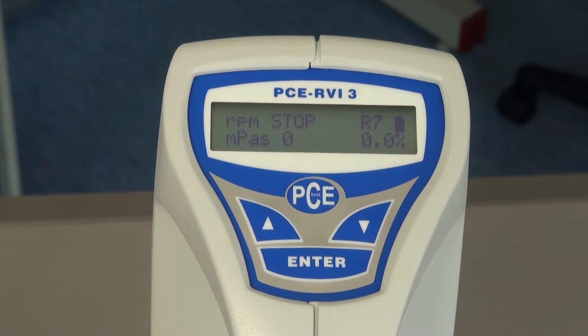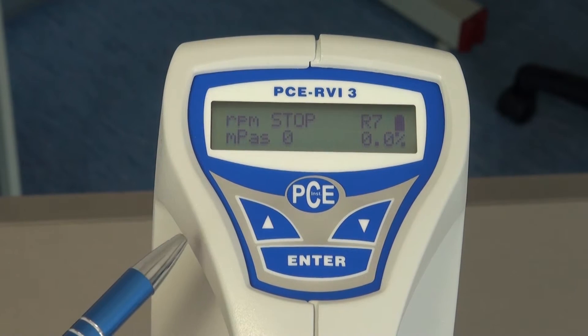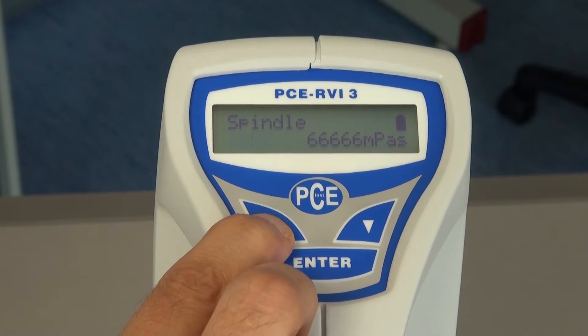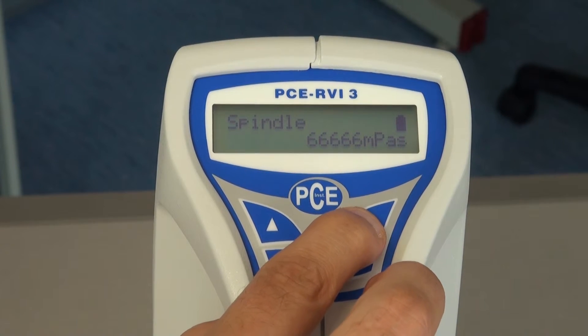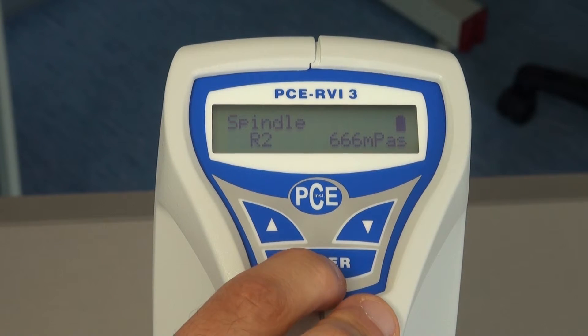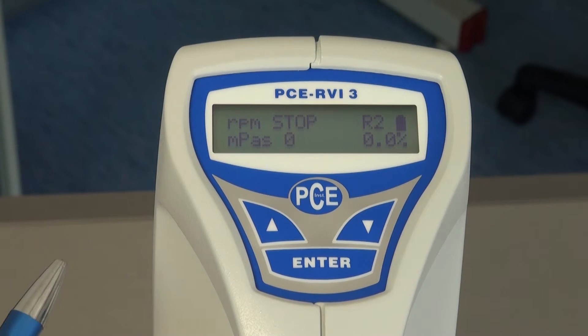Here at the top the number of the spindle is given. This can be set by using the arrow keys. We have for example chosen a spindle number 2. And by using the arrow keys I can choose spindle number 2. By pushing the enter key it is confirmed. And the measurement device is now ready to use.